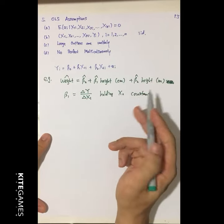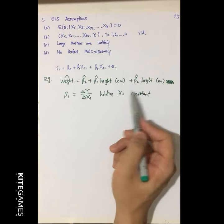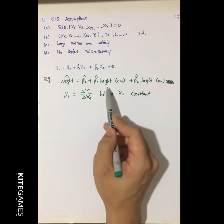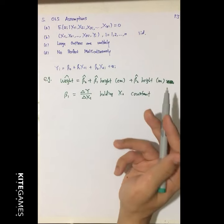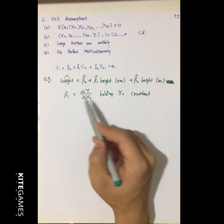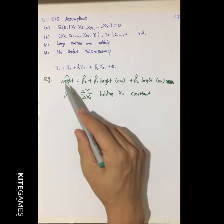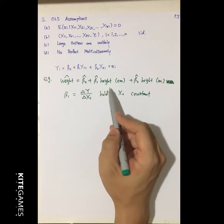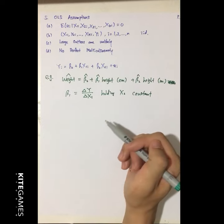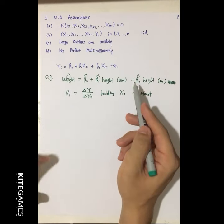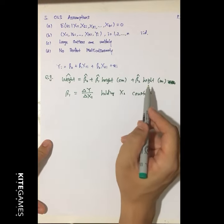But in this case, height in cm and height in meters are perfectly correlated. If your height increases by 100 cm, your height in meters increases by 1. Therefore, it is nonsensical to say β1 means the change in weight when height in cm increases while height in meters stays constant. So we must assume that x1i and x2i are not perfectly correlated.